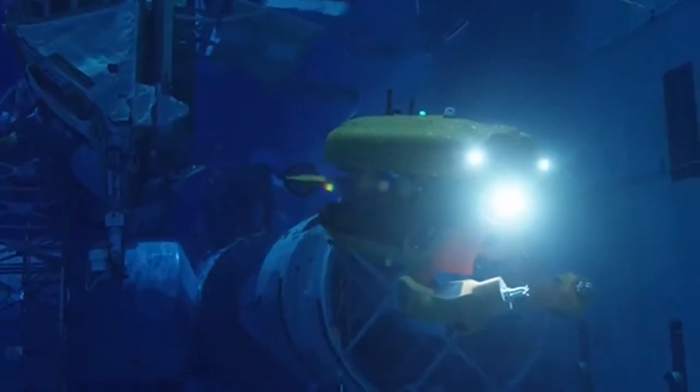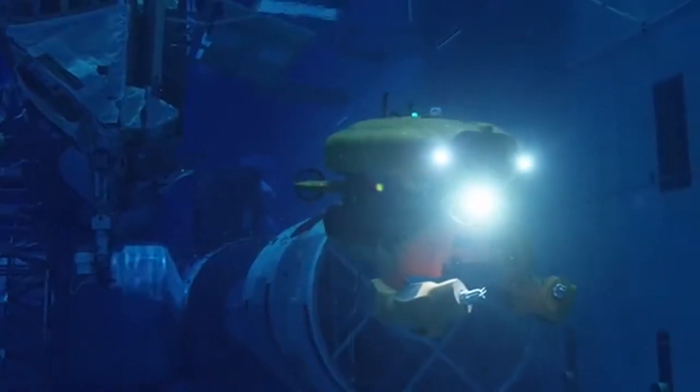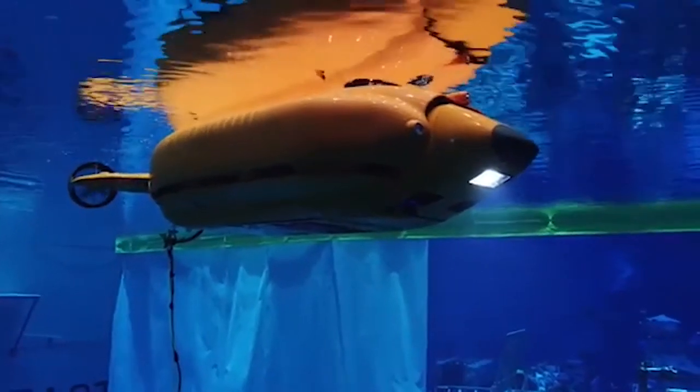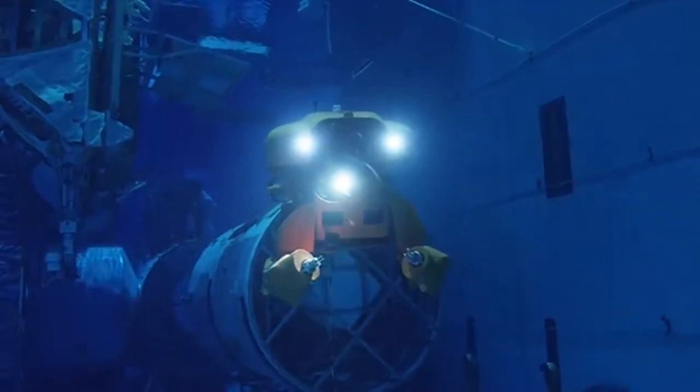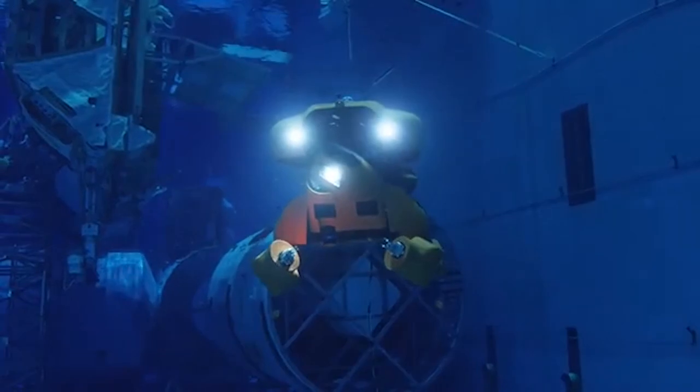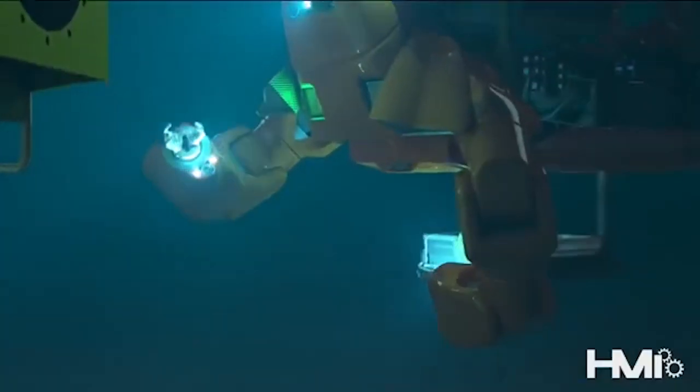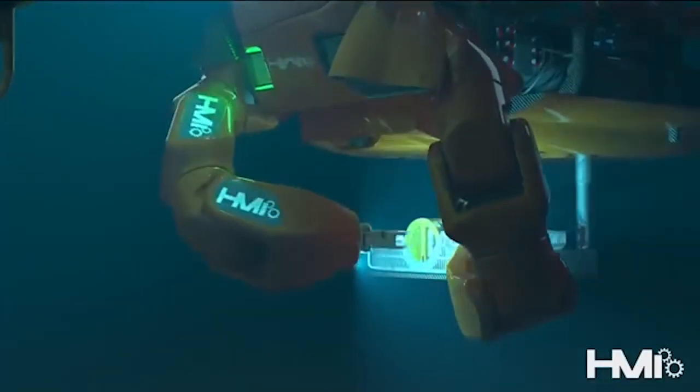The Aquanaut's design allows it to transform from something that is like a sleek and compact submarine into a vaguely humanoid form that's equipped with two long arms, which allows it to perform various tasks underwater. The Aquanaut can transform into either of the two modes.